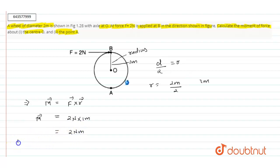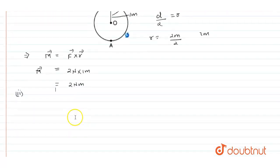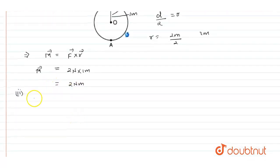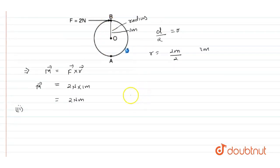Now our second part is we have to find out the moment about the point A. Point A will be at the diameter of the circle.